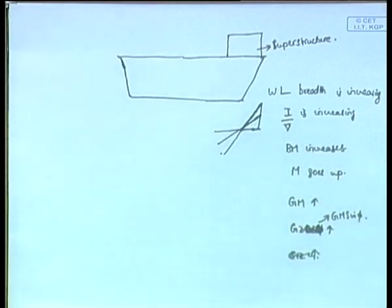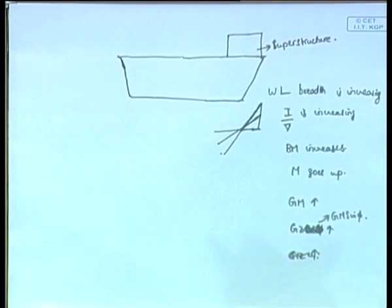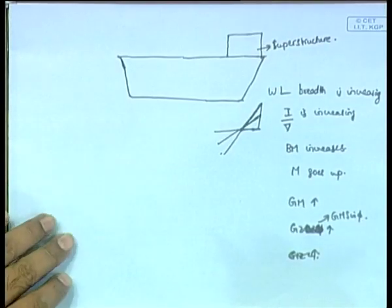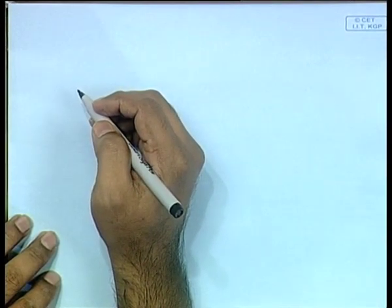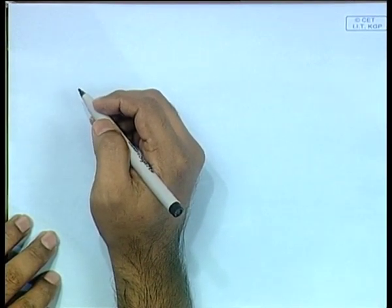When GZ increases, obviously the righting moment increases, and dynamic stability also increases. Then there is the direct effect — if you increase the beam or breadth of the vessel, similar logic applies. These are different ways in which changing the form of the ship affects GZ or the stability of the ship.